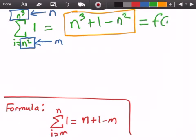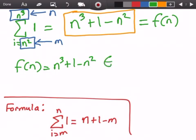So now what's the Big O notation for our function f(n) which is equal to n cubed plus 1 minus n squared? Well, f(n) belongs to Big O of n cubed.